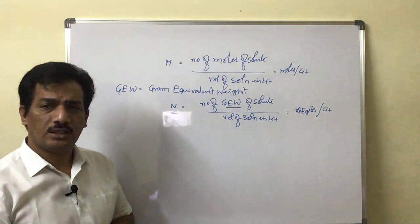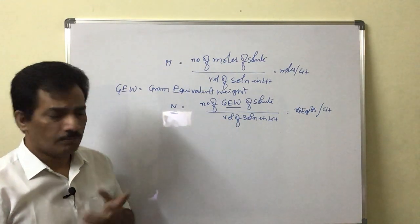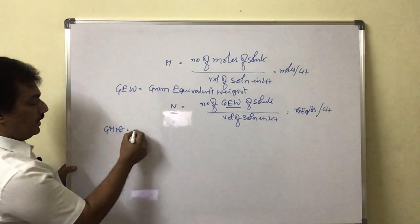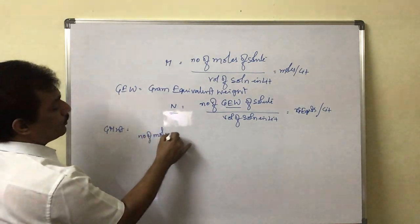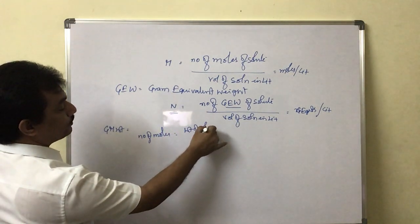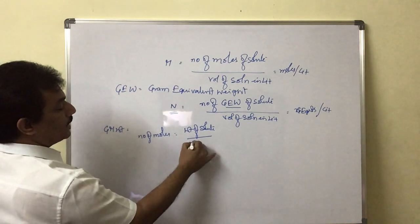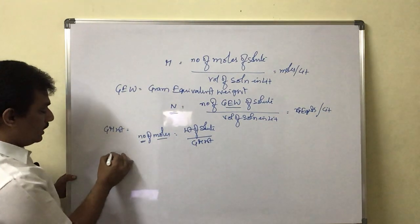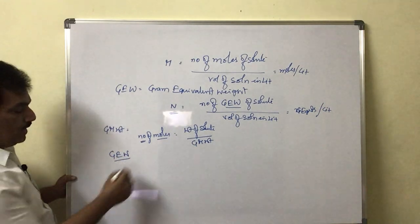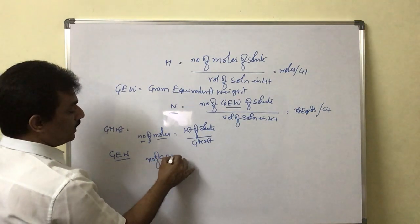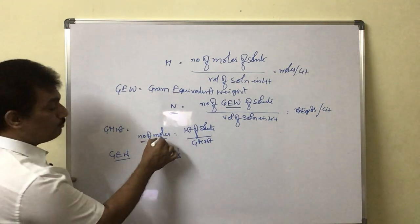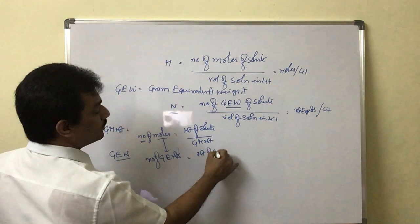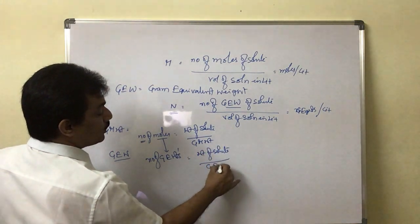Let me give the comparison so you can easily understand what is equivalent weight and gram equivalent weight. In the case of moles, you know gram molecular weight. Once you know the gram molecular weight, the number of moles is nothing but weight of solute divided by gram molecular weight. Similarly, if you know gram equivalent weight, the number of gram equivalent weights is nothing but weight of solute divided by gram equivalent weight.